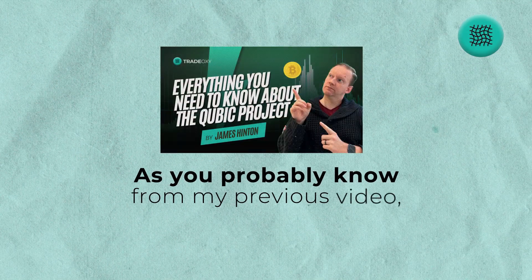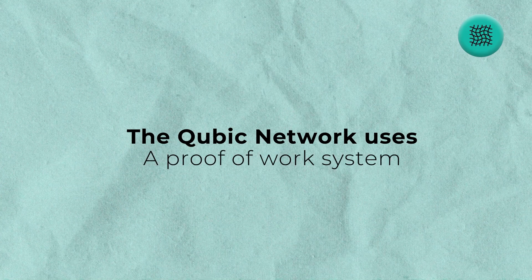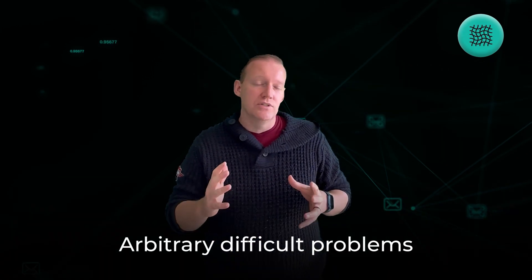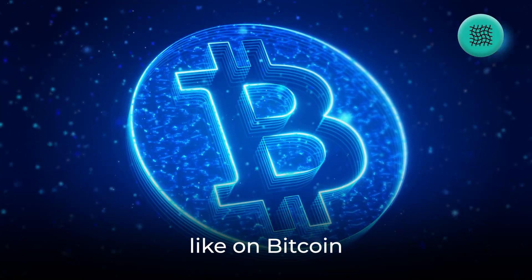As you probably know from my previous video, the Qubic network uses a proof-of-work system that they call useful proof-of-work. Useful proof-of-work simply means that instead of solving arbitrary difficult problems like on Bitcoin, they actually solve real-world problems to help train artificial neural networks, which is actually pretty awesome.